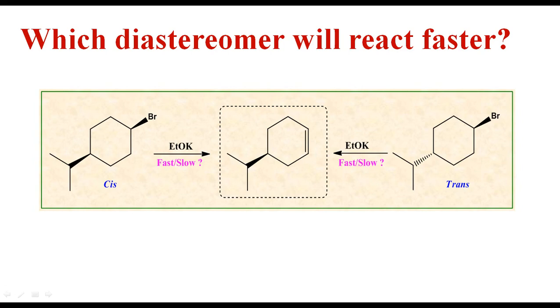In this video we are going to solve a problem based on E2 reaction. We have to find which of the two diastereomers of 1-bromo-4-isopropyl-cyclohexane, cis and trans, will undergo faster elimination under E2 reaction conditions.